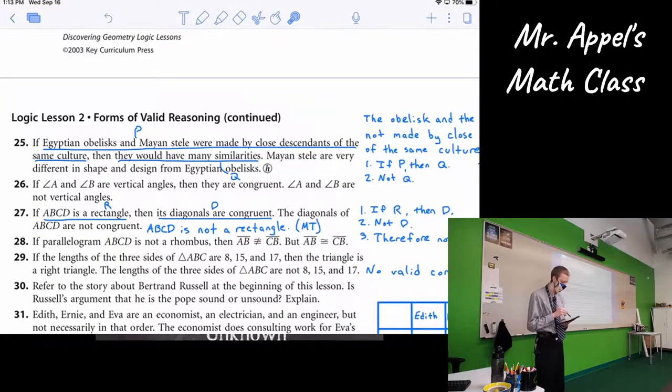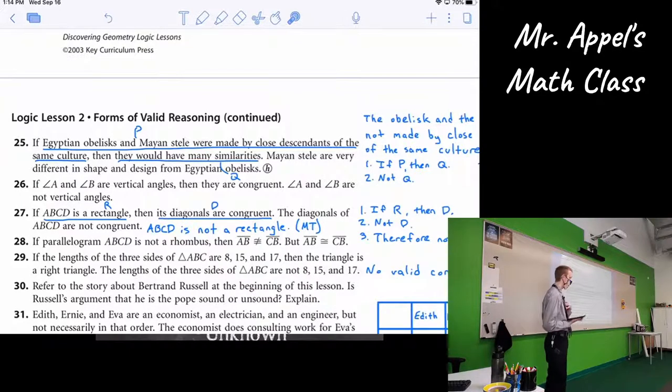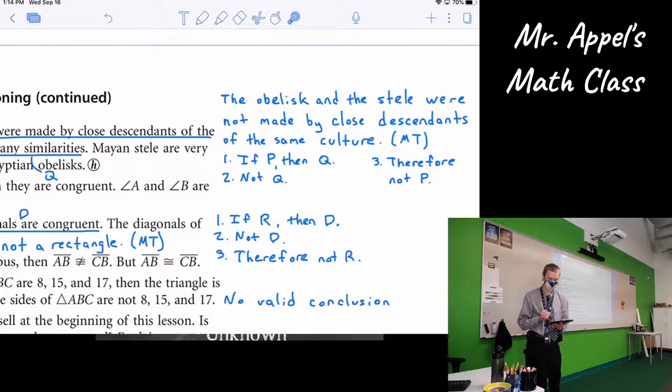All right, next up, 25, was very wordy. It says, if Egyptian obelisks and Mayan stele were made by close descendants of the same culture, then they would have many similarities. Mayan stele are very different in shape and design from Egyptian obelisks. This is true. I've looked these things up. That is, as far as I understand the correct pronunciation, they are way cooler than Egyptian obelisks, by the way. You should check them out. We have a case of, seems like modus tollens right there, right? I have if, then, I have a conditional. They would have many similarities. But the second statement says they're very different. That's the opposite of similarities, right? It's saying they are not similar, right? So what we've done here is we've said, if P, then Q, not Q, therefore, P. No, therefore, not P.